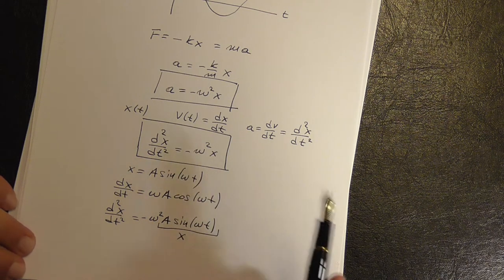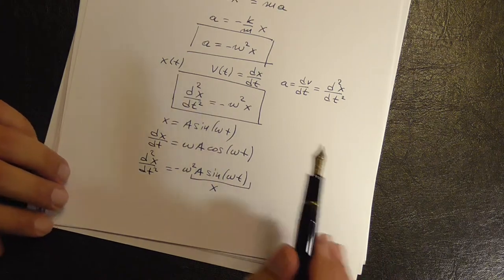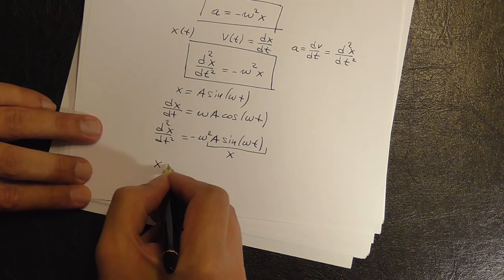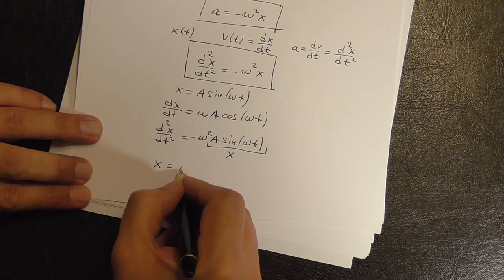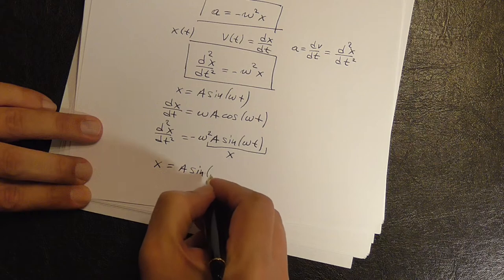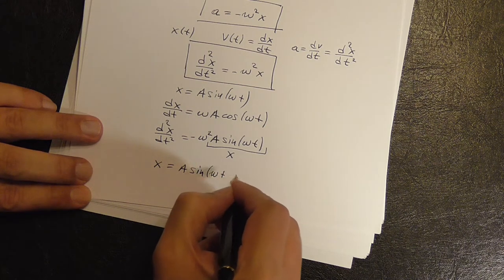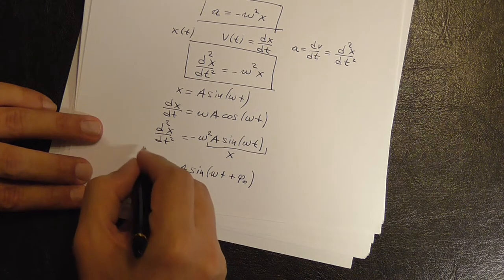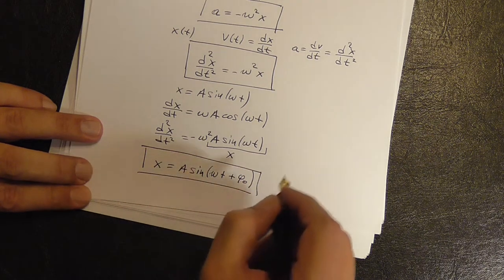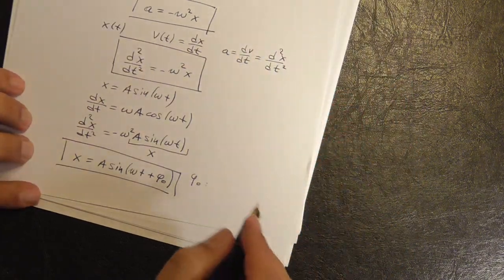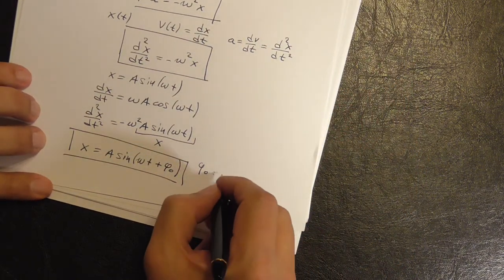So in general, the solution is X is equal to A sine of omega T plus phi 0 where phi 0 is called initial phase.